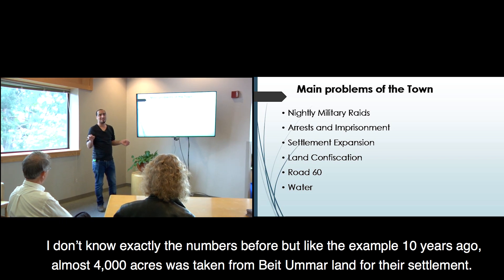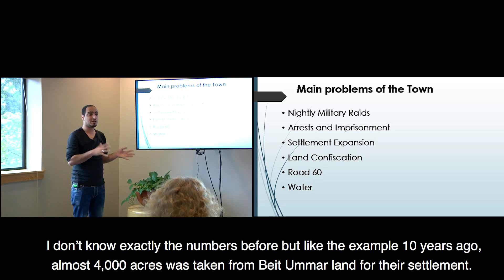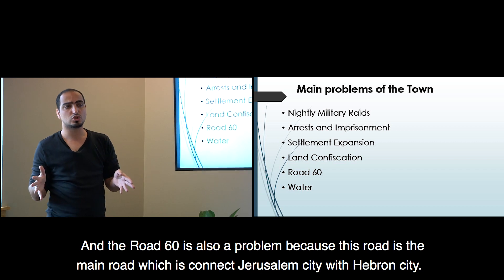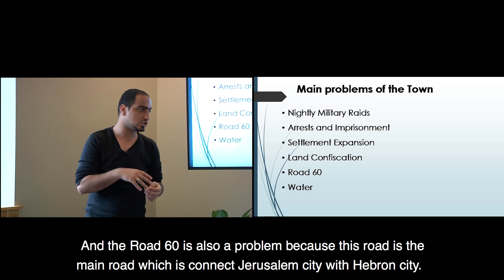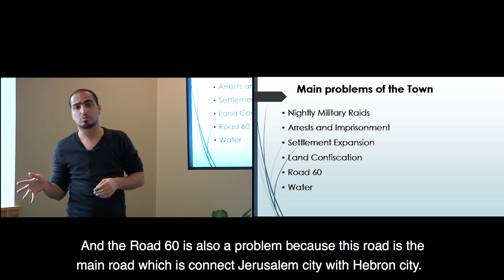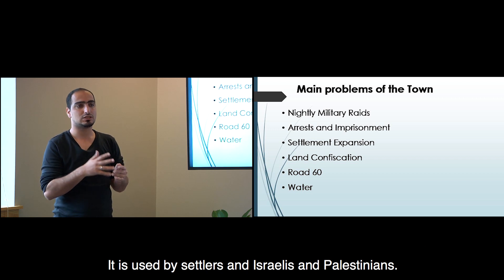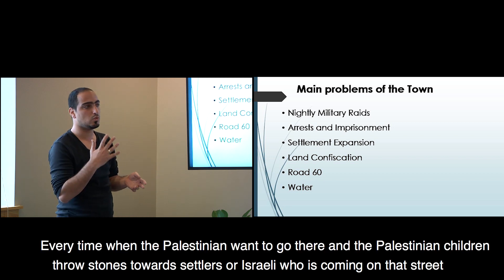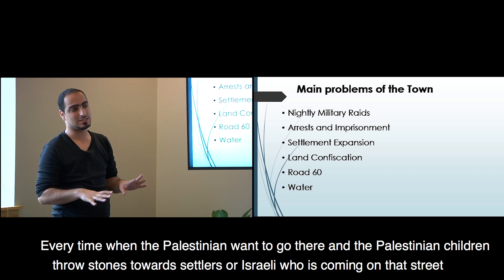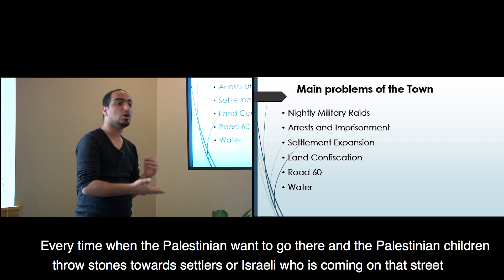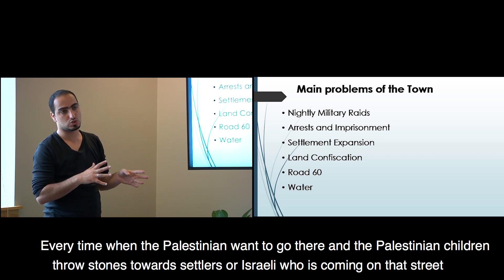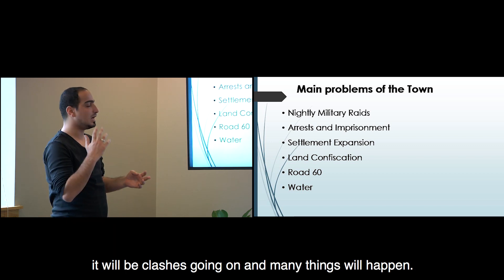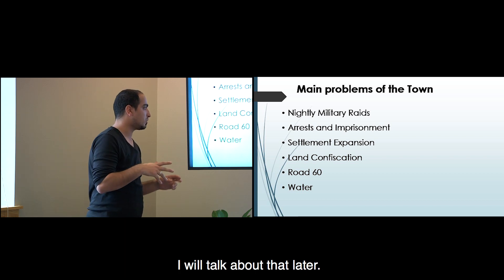About 10 years ago, almost 4,000 acres were taken from Beit Omar's land for the settlements. Road 60 is also a problem - it's the main road connecting Jerusalem to the city, used by settlers, Israelis, and Palestinians. When Palestinian children throw stones at settlers or Israelis on that road, clashes break out.